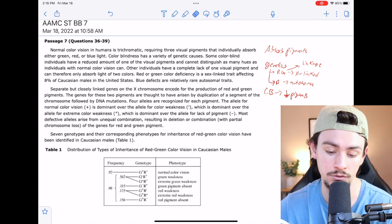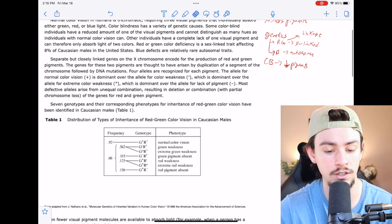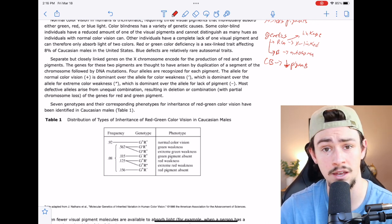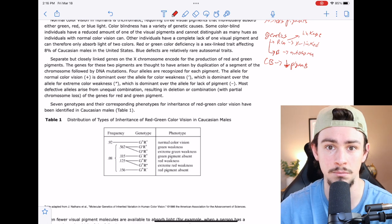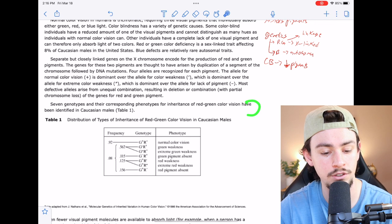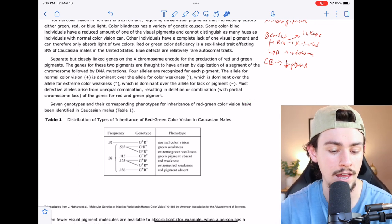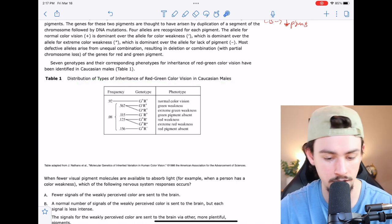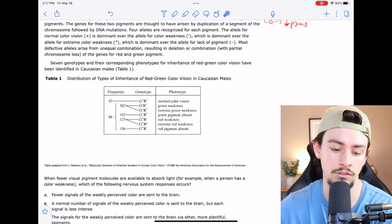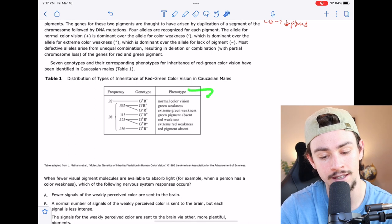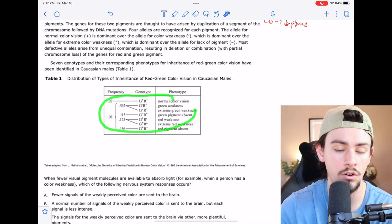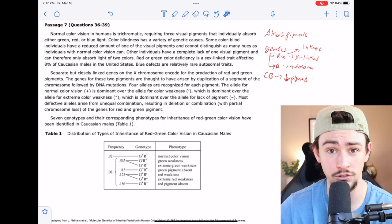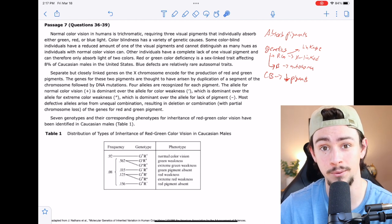Most defective alleles arise from unequal combination resulting in deletion or combination with partial chromosome loss of the genes for red and green pigment. There's a whole lot going on there, but I don't think it's a great usage of my time to write out what each of the pluses and apostrophes and dashes mean when I know exactly where it is in the passage. It says seven genotypes and their corresponding phenotypes for inheritance of red-green color vision have been identified in Caucasian males. So it's just giving me a description of what table one is. When we're interpreting figures, this is giving us a picture of the frequency, what the genotype looks like, and how that ends up playing in the phenotype for Caucasian males. I'm not going to worry about interpreting all of this because I don't know what it means and I might not even get asked a question on it. So I'm going to skip to the questions. You'll notice that's a relatively short passage, which means get ready for the questions - they're about to be gassed up.